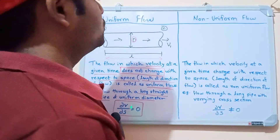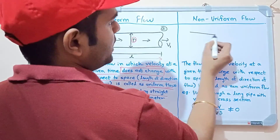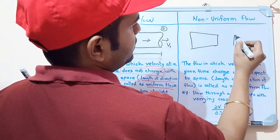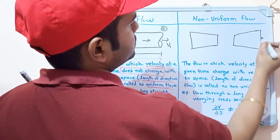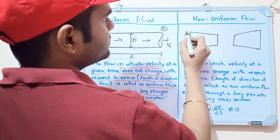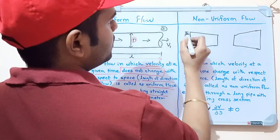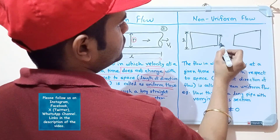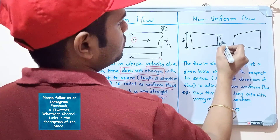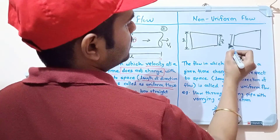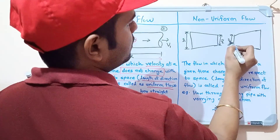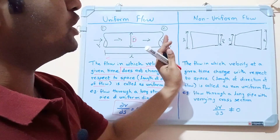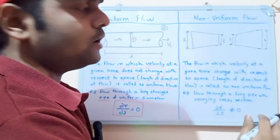Now let's see non-uniform flow. Here we are taking two pipe examples. In the first pipe, the diameter is d1 at one end and is reduced to d2 at the other end. Similarly, in the second pipe it is d1 at one end and d2 at the other. So there is a change in diameter of the pipe along the length.